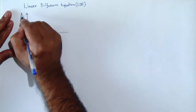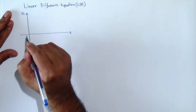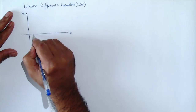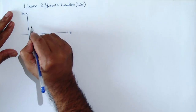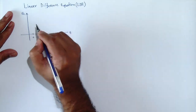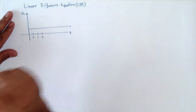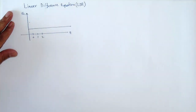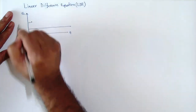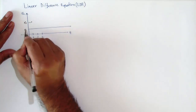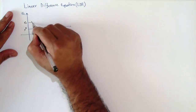Hello everybody, today we are going to discuss the linear difference equation and how to find the solution of linear difference equations. We will also discuss the stability, monotonicity, and cyclicity of the solution. Linear difference equations model how a variable, say x_t, moves through time. At time t equals zero we have the value x_0, and at time t equals one we have the value x_1.